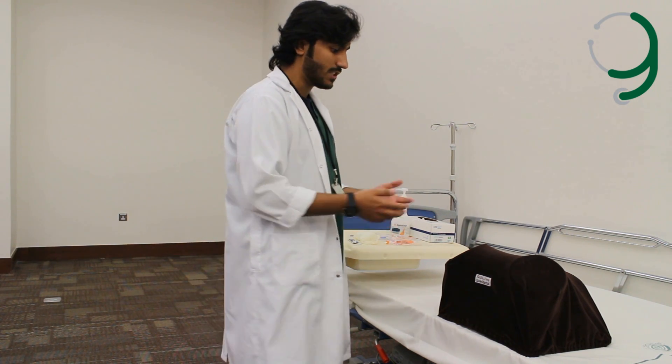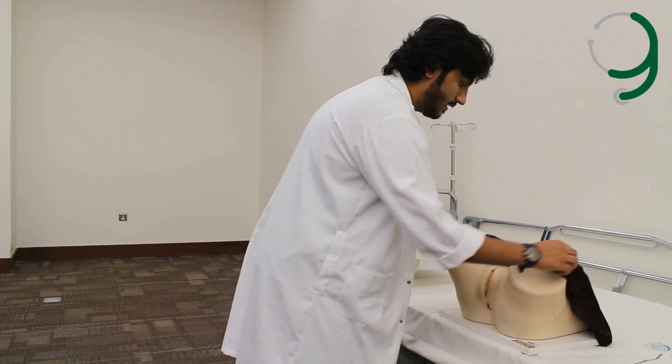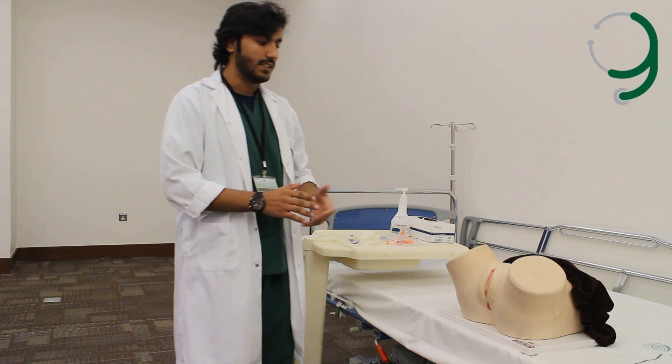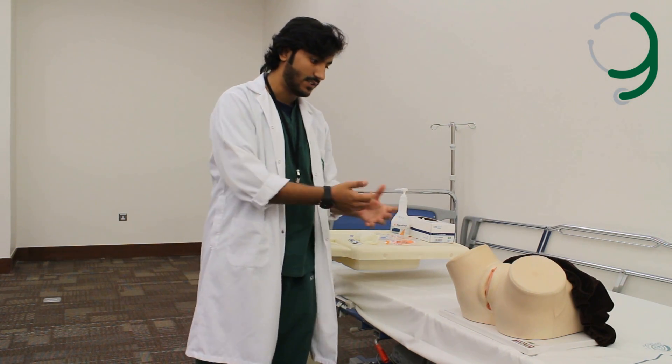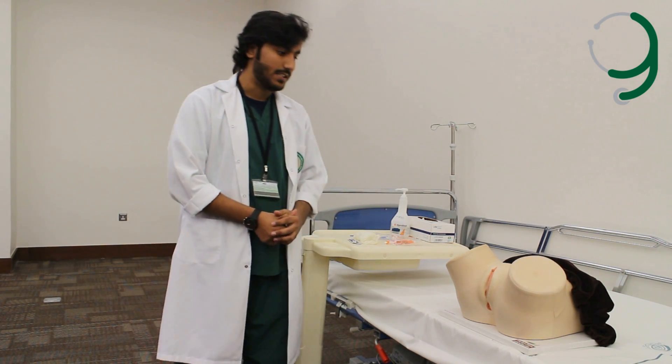To begin the vaginal examination, you have to tell the patient to expose herself until the waistline. After covering herself, tell the patient to lie in a semi-lithotomy position, like so. Her legs will be like this. And then you can begin the examination.